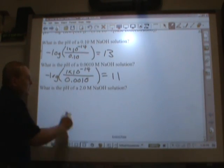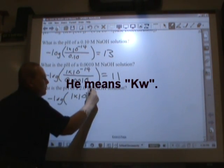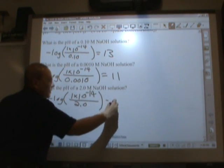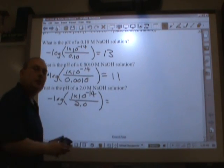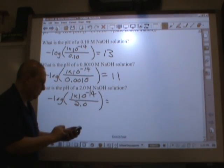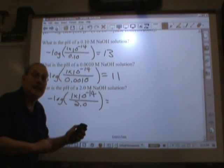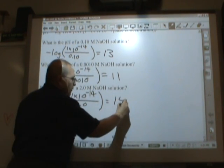For the last one, we take the negative log of the base concentration, 1 times 10 to the negative 14th, over 2.0, pop this in your calculator and see what you get, bet I beat you. You get a pH of 14.3, but because we only have two sig figs here, that pH is 14.